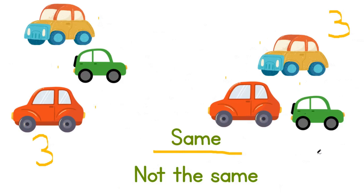That means that they are the same. But they are in a different arrangement. On the left, you have the orange, blue, and yellow car right at the top. Under that, you have the green car. And under that, you have the red car. But if we look at the right, we have the orange, yellow, and blue car at the top, and we have the red and green cars next to each other under the multicolored car. They are the same cars with the same number on each side, just in a different formation — they are rearranged.